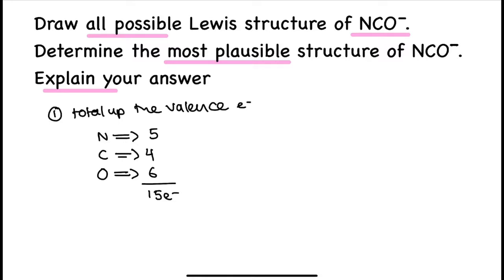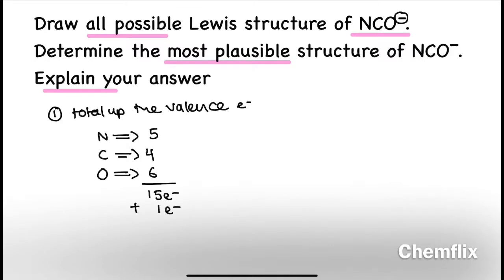Since NCO⁻ has a negative charge, you must add 1 electron corresponding to the negative 1 charge, giving a total of 16 electrons to draw the Lewis structure.